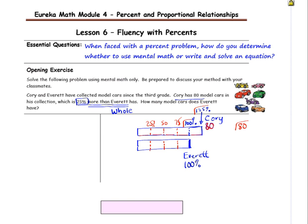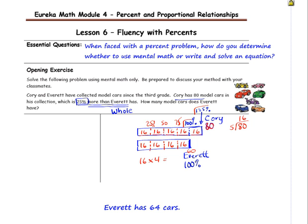So 80 divided by five sections is 16. That means that 16 cars go in each section, and 25% of the collection is 16 cars. Then Everett has four of those sections that have 16 cars in them. So 16 times four is Everett's total of 64 cars. So now we know that Everett has 64 cars in his collection.